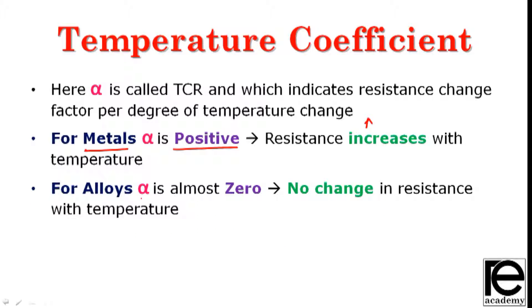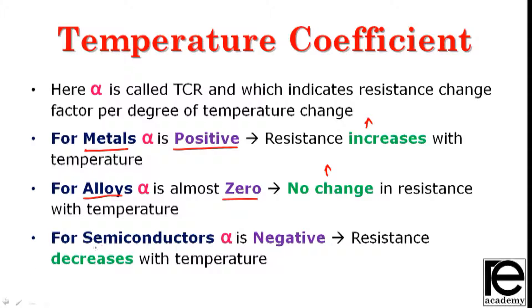Alloys such as nichrome and alnico are combinations of metals whose TCR is almost zero. The TCR of alloys is very small, making them useful for precision resistors where stable resistance over temperature is required.